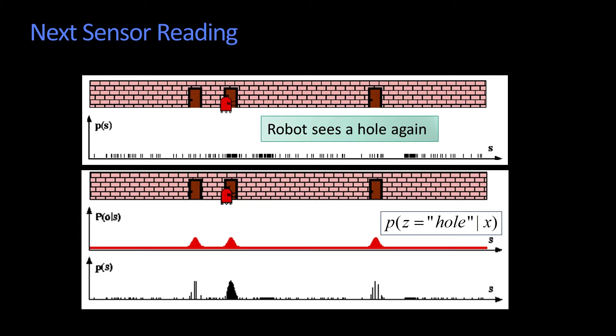but this time I multiply the previous density by this. And you'll notice now that the robot has a lot of belief, okay, that it's actually where it really is.